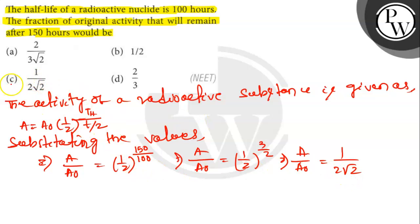Hence, option C is the correct answer. The fraction of original activity that will remain after 150 hours would be 1 by 2 root 2.